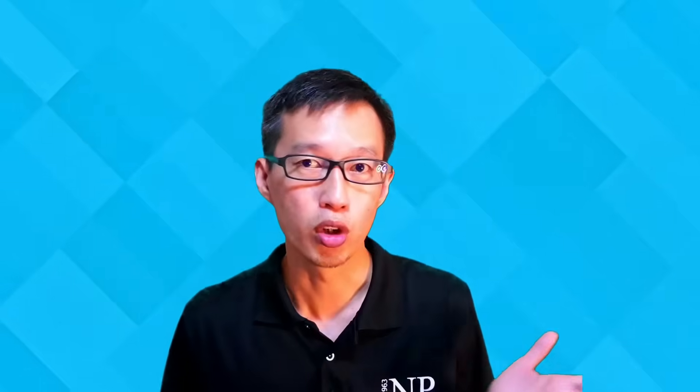Let's assume the bond has a 2-year maturity and a face value of $1000. The government is also going to pay you back an additional amount of money in the form of coupons — let's assume a 1% coupon per year. 1% of $1000 is $10. So in a 2-year term, it will pay you 2 coupons: 1% in the first year and 1% in the second year. At the end of the second year, it would also pay you back the face value of $1000.